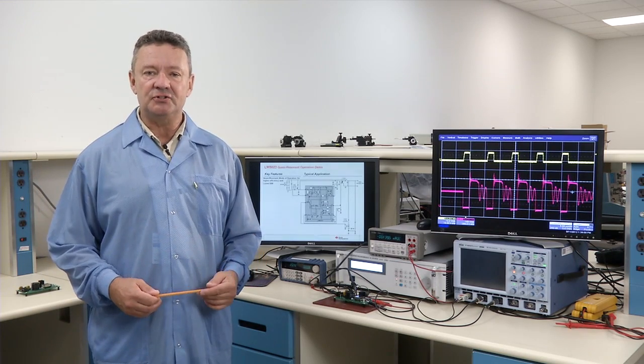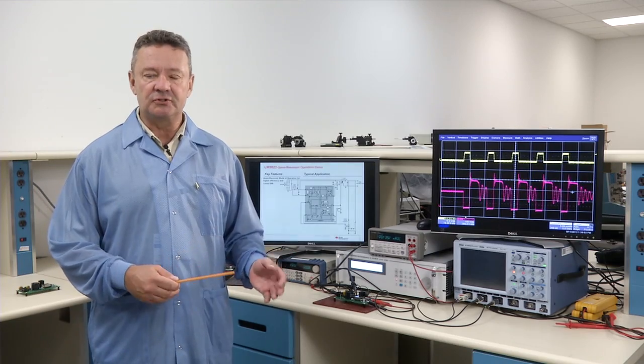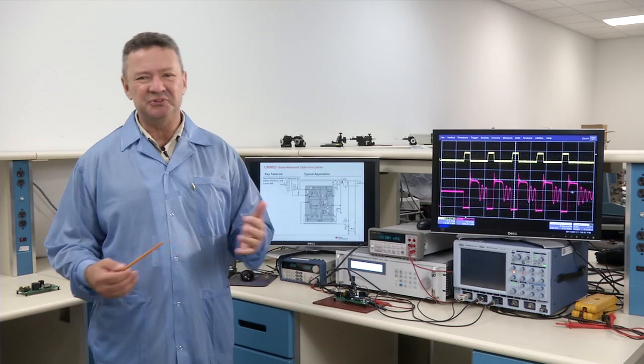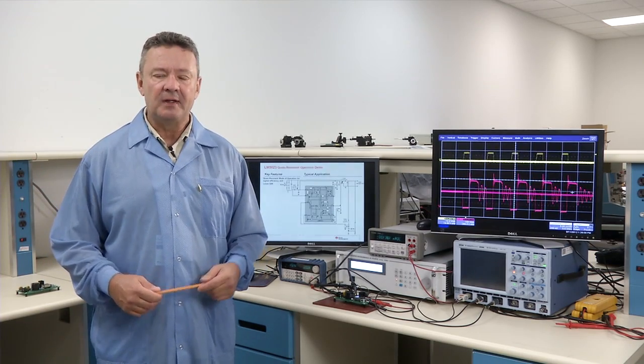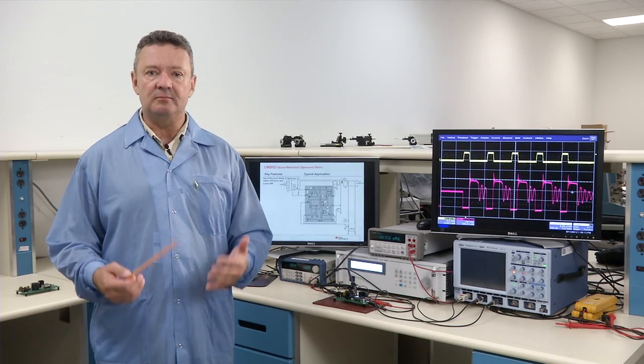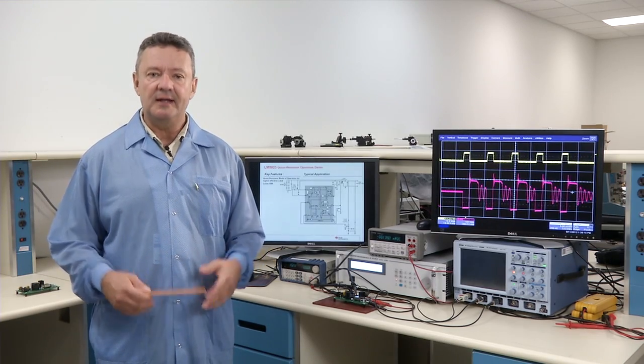Typical applications for the LM5023 are battery chargers, notebook adapters, and really any bias power from 2 to roughly 70 watts. The key feature I'm going to be talking about today is the quasi-resonant mode operation of the 5023 and how it works.